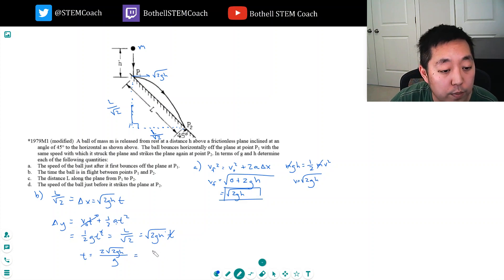So t is equal to two square root of 2gh over g, which is the same as two root two. Actually nope, not quite right, because I'm dividing by g. It's two square root of 2h over g. All right, that's the time that they're in flight.